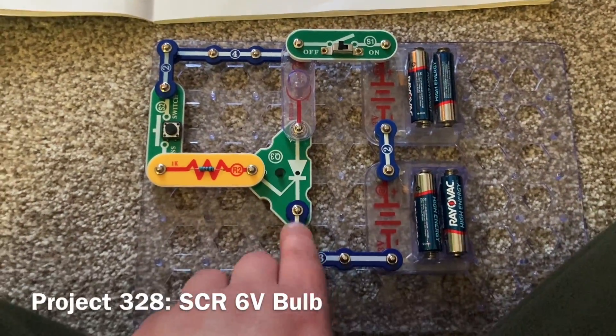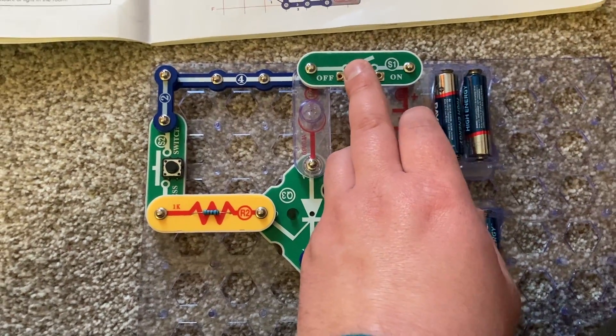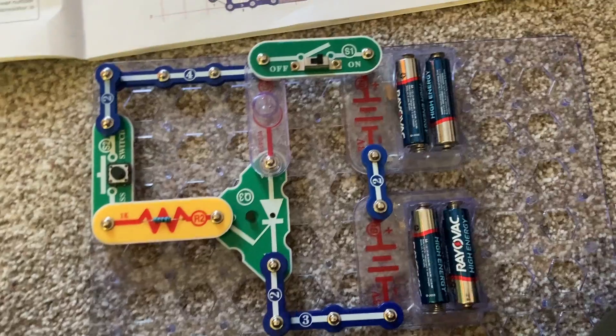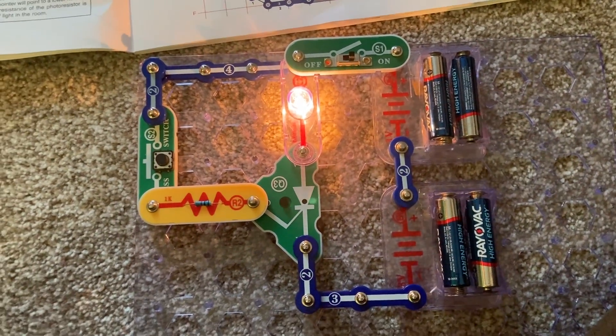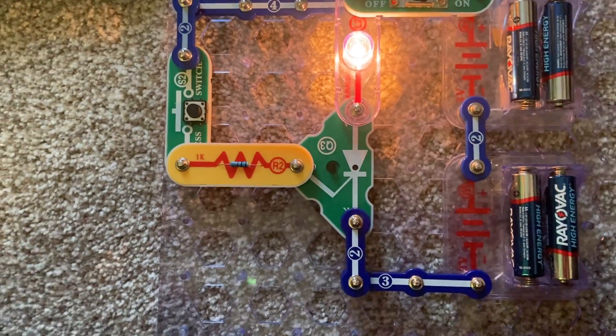This is another circuit that demonstrates how the Q3 diode works. When I turn on the slide switch, nothing happens. Then when I push the press switch, the lamp comes on due to the direction in which the current must flow.